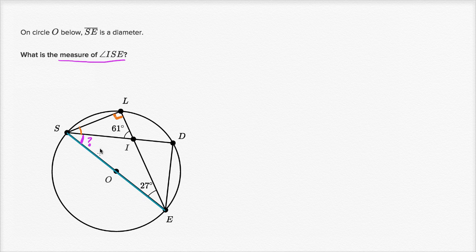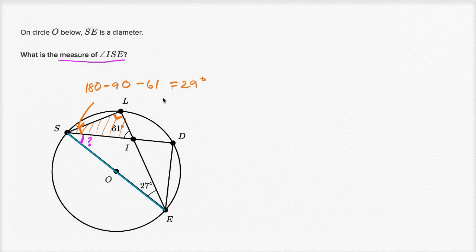If we look at this triangle, we could use: 90 plus 61 plus this angle is going to be equal to 180 degrees. So this angle right over here is going to be 180 minus 90 minus 61, which is equal to — 180 minus 90 is 90, minus 61 is 29 degrees. So this one right over here is 29 degrees.